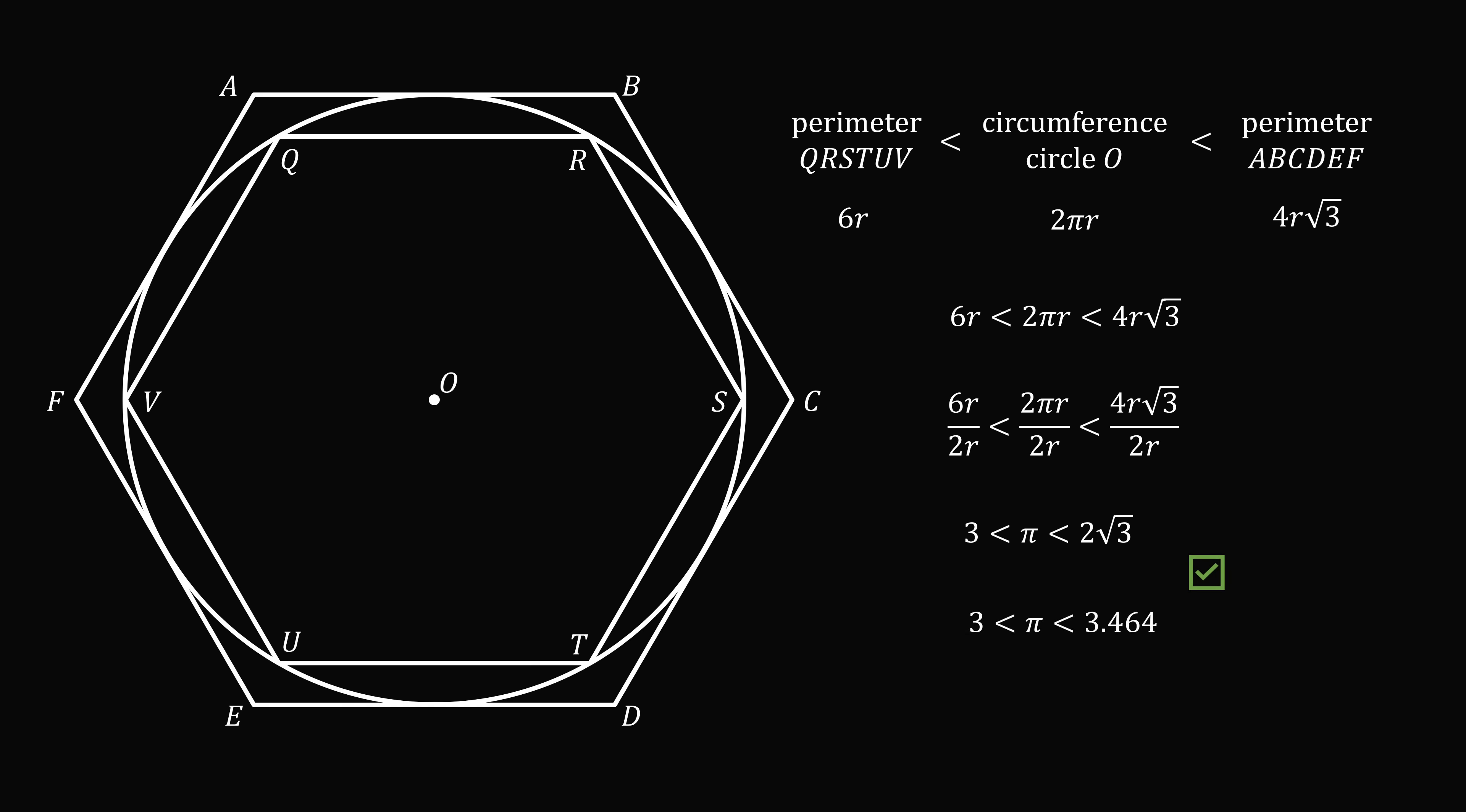So this calculation gives an estimate that pi is greater than 3 and less than 3.464. This is not a great estimate, but it's also not bad for such a simple calculation.